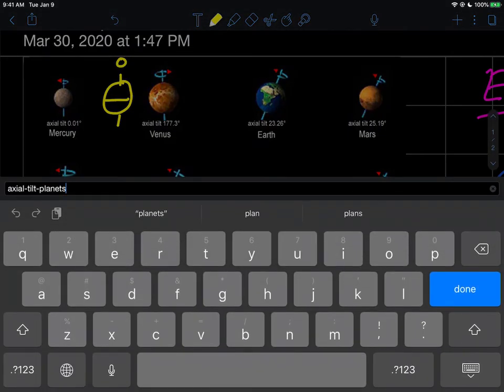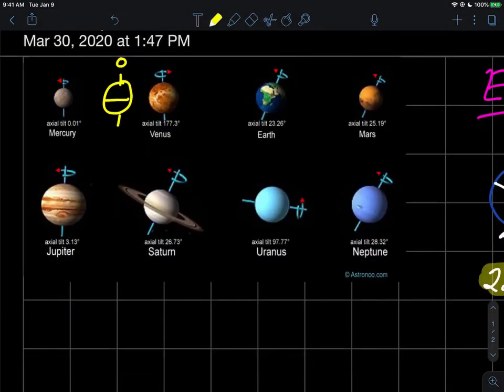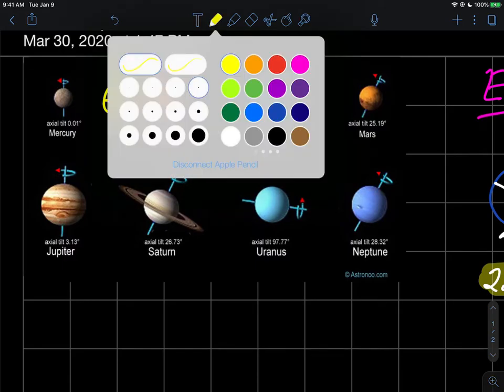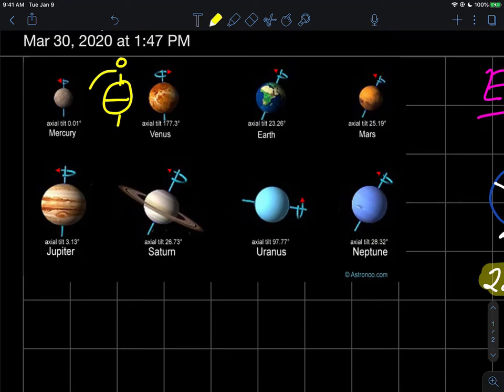But Venus is tilted so much that it's actually at 177 degrees, so something in Venus's past actually caused it to flip all the way upside down. Venus can sort of be thought of as the upside down planet.